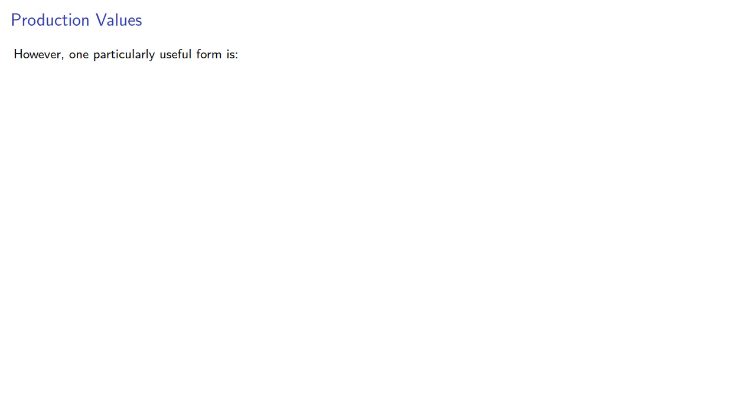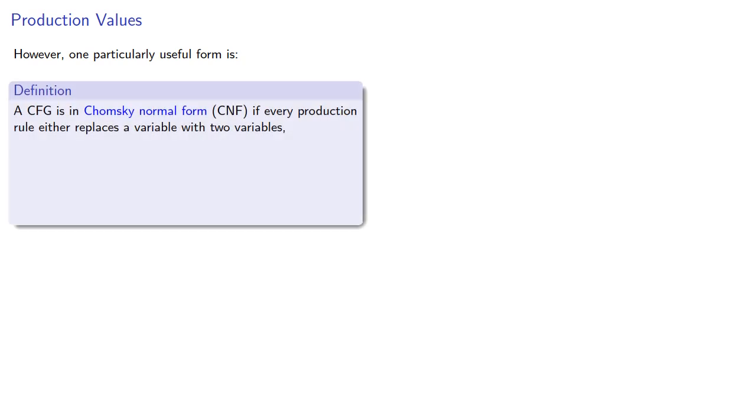However, one particularly useful form is known as the Chomsky Normal Form. A context-free grammar is in Chomsky Normal Form if every production rule either replaces a variable with exactly two variables, or replaces a variable with exactly one terminal. And note this automatically excludes lambda productions and unit productions.